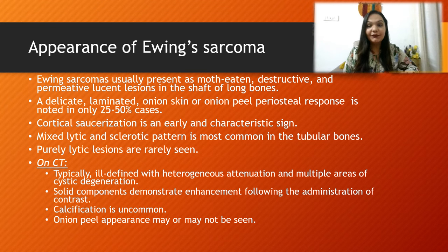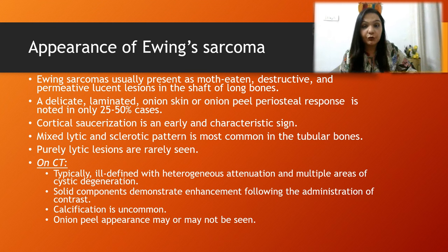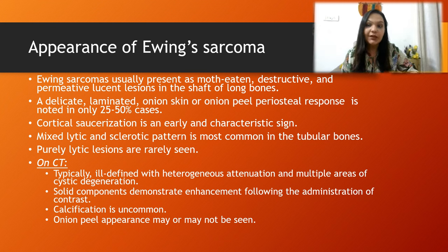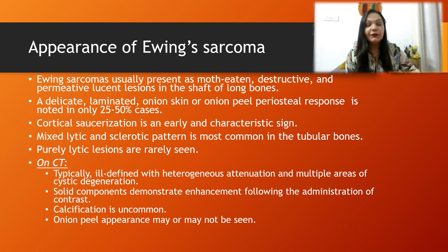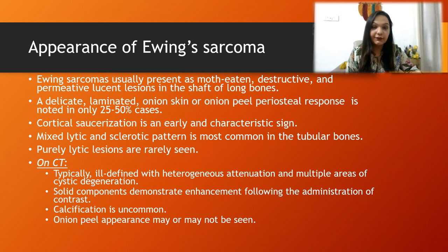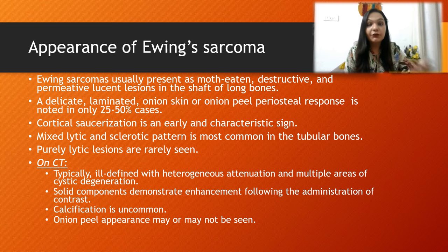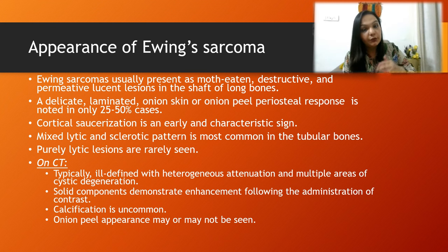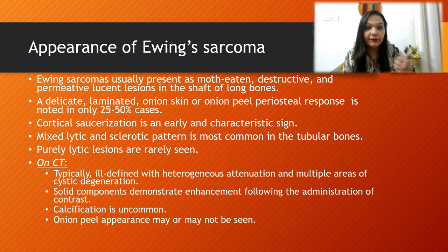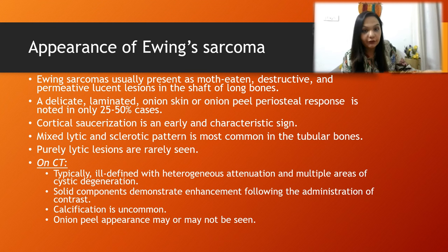On radiographic imaging, Ewing Sarcoma presents as moth-eaten, destructive, permeative, lucent lesions in the shaft of the long bones. A delicate laminated onion skin or onion peel periosteal response is noted in 25 to 50% of cases. The onion peel appearance is a very characteristic sign, followed by cortical saucerization, which is an early and also characteristic sign. These two signs are key to remember.